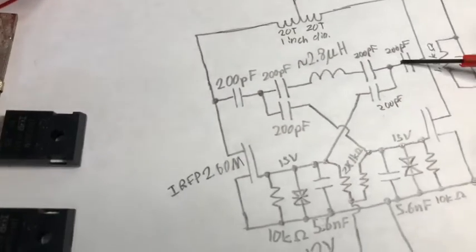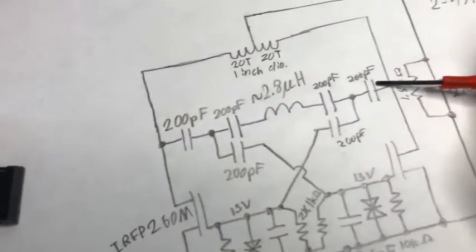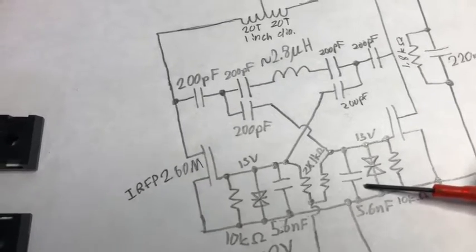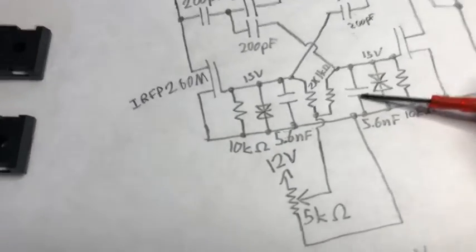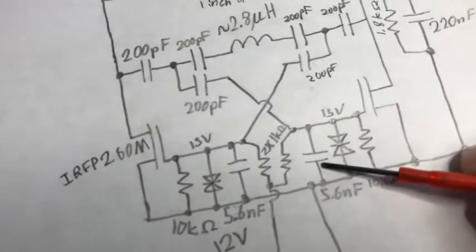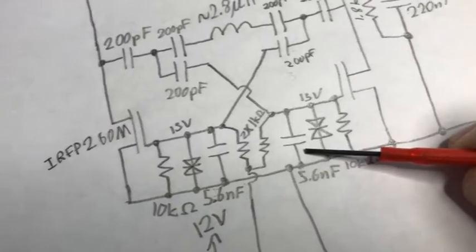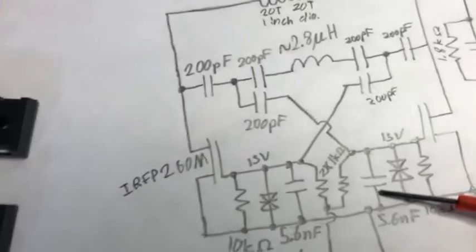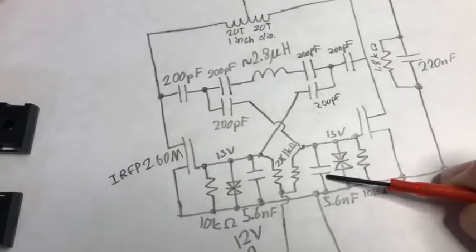These ones are 200 pF 3kV COG capacitors in parallel. And these ones are one 5.6 nF, I think 400 something volt COG capacitor. These should actually be multiple capacitors in parallel, but I ran out of 1 nF COG capacitors, so I just used a single 5.6 nF and it does work. But I will be replacing those with a few 1 nF in parallel.